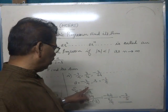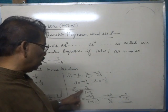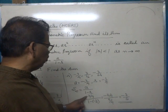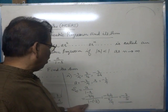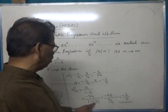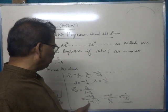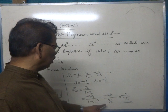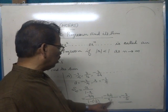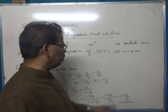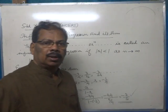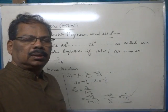The sum to infinity is given by the formula a divided by (1 - r). Here a is -3/4 and the common ratio r is -1/4. So 1 minus (-1/4) is 1 plus 1/4, which is 5/4. Therefore -3/4 divided by 5/4 equals -3/5. The sum to infinity is -3/5.